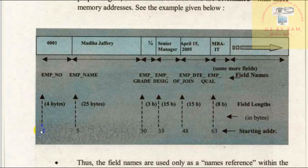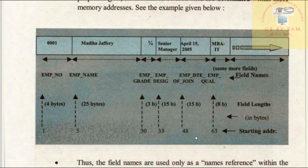The starting address is 1. If you have 4 bytes, the first byte starts from address 1. After 4 bytes, the next byte starts from address 5. The employee name field is 25 bytes, so 5 plus 25 equals 30 — the next address is 30. After 3 bytes for grade, it comes to 33. After 15 bytes, it comes to 48. The next comes to 63. Each byte holds a character or digit, and 1 byte equals 8 bits, so 4 bytes is 32 bits. The employee number field therefore holds 32 bits.